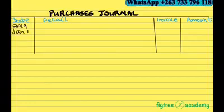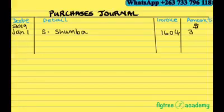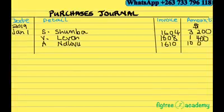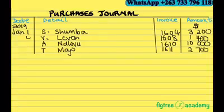I'll start recording: 2019, January 1, S. Shumba — given receipt 1604 with 3,200 bought on credit. Then February 11, 1,400.